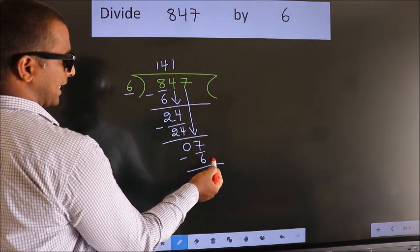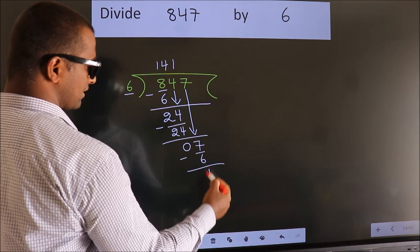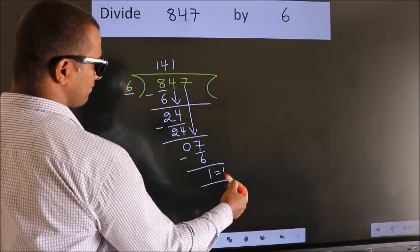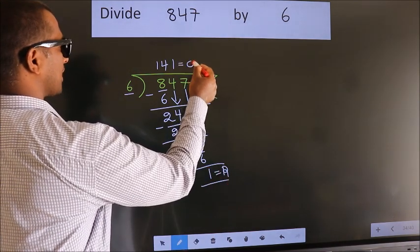No more numbers to bring it down. So, we stop here. This is our remainder. This is our quotient.